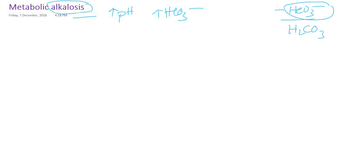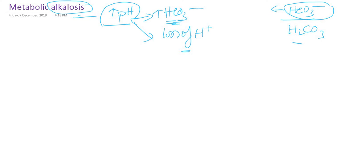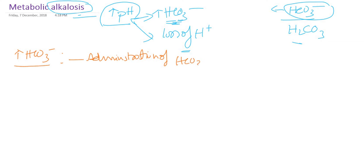Bicarbonate is our metabolic component. There can be an increase in bicarbonate, or there is a loss of hydrogen ion, or a decrease in acid. If the acid component in the denominator is decreasing, there may also be alkalosis. The increase in bicarbonate is mainly due to therapeutic causes — usually administration of alkali, especially bicarbonate. Some patients require bicarbonate, such as soda bicarbonate, to treat cardiac arrest and similar conditions.